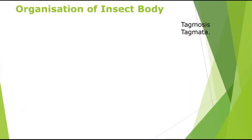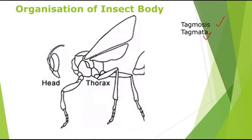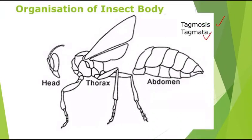Now we will move on to the next topic: the organization of the insect's body. We have discussed the segmentation of the insect's body. Insects are divided into sections or segments, and that process of segmentation is called tagmosis; each segment is called a tagmata. The three segments are head, thorax, and abdomen.